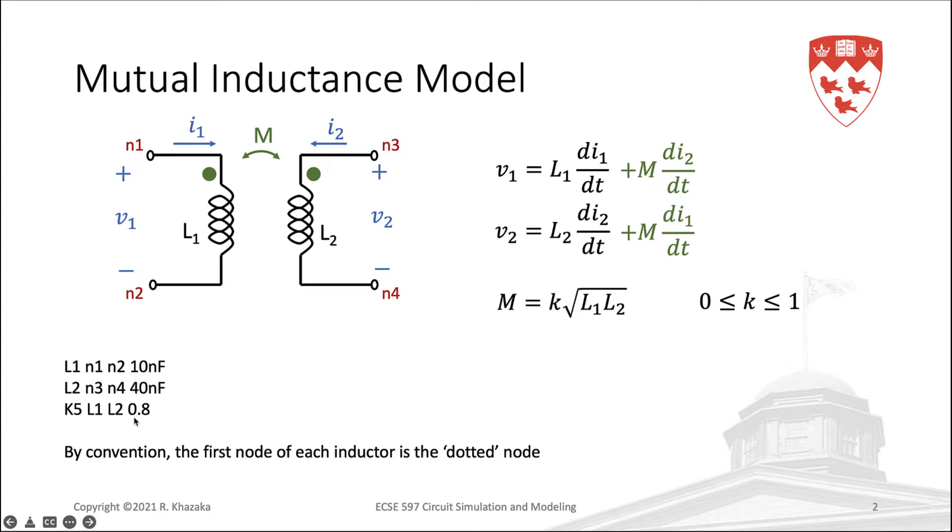Another important point is that we need to specify which node is the dotted node in each inductor. By convention, the first node listed for each inductor is the dotted node. In this case, it is node N1 for L1 and node N3 for L2.